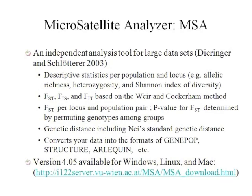The Microsatellite Analyzer, MSA, was originally designed to handle large microsatellite datasets, but can be used for other types of markers including SNPs. This program calculates several useful statistics for genetic analysis. For example, you can calculate descriptive statistics including allelic richness, heterozygosity, and Shannon index of diversity.